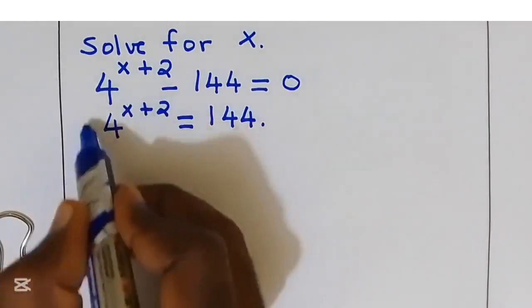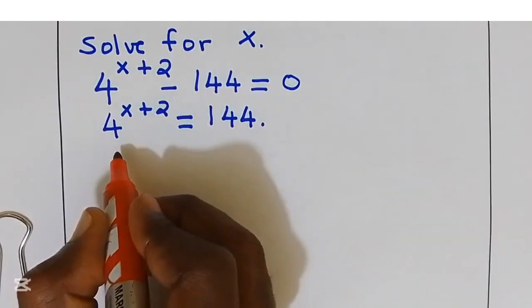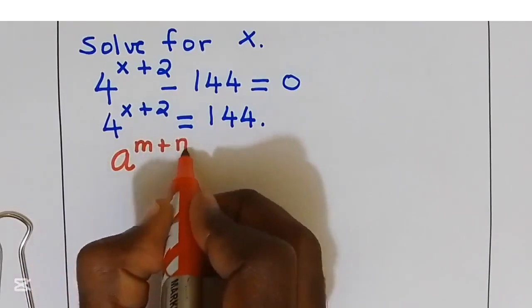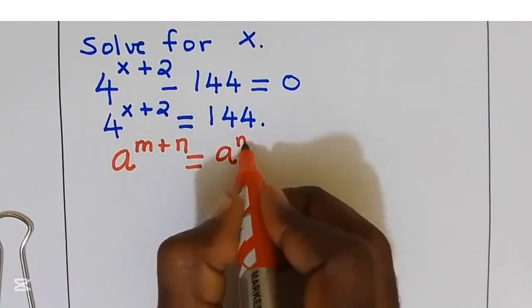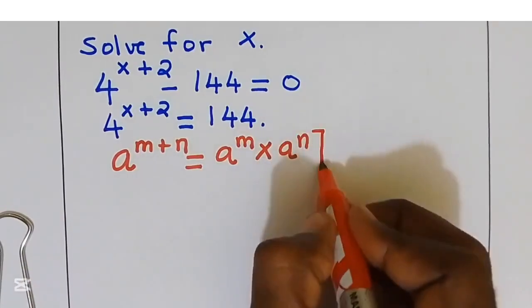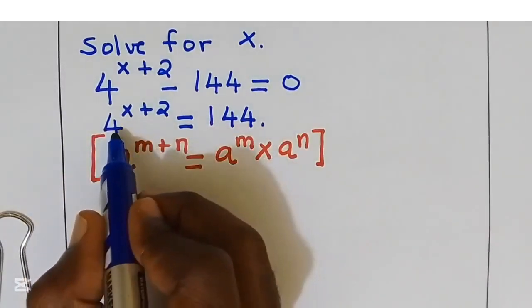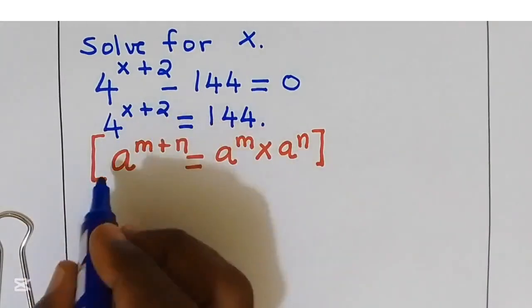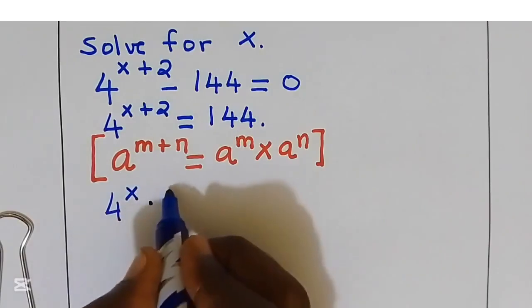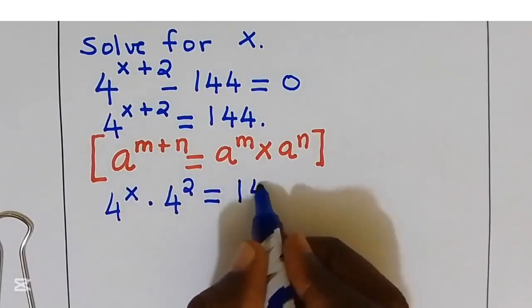Now we are going to split this term into a product. We know that if we are given a to the power of m plus n, this is equal to a to the power of m multiplied by a to the power of n. So 4 to the power of x plus 2 is equal to 4 to the power of x multiplied by 4 to the power of 2, and this equals 144.